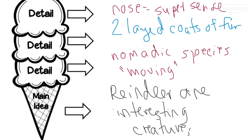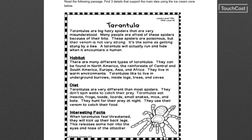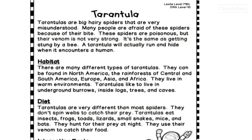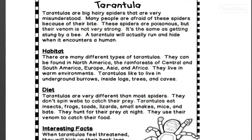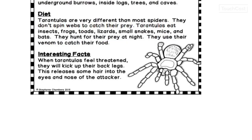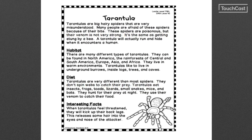Let's go back to the main idea. Do all of our details support it? Is it interesting that they are constantly moving? Yes. Is it interesting that they have a two-layered coat? Yes. And is it interesting about their super sense nose? Yes. All right, it is your turn. You're going to read about tarantulas and figure out the main idea and three details. So I'll let you pause and zoom in. We'll talk about it tomorrow. Here's your main idea and detail chart — main idea and three details about tarantulas.